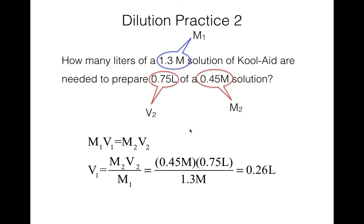These dilution problems always start with the M1V1 = M2V2 formula. Figure out what numbers you have, and there should be just one missing that you'll solve for. You'll get more practice in the homework, and make sure you watch the tutorial video as well.